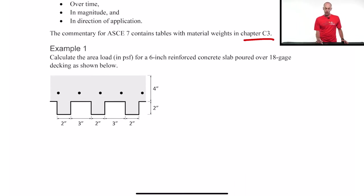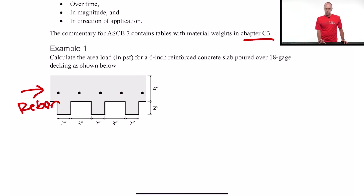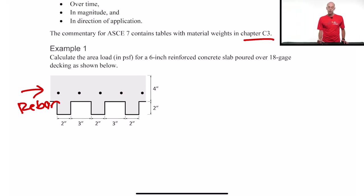Let's do a fairly simple example about how to calculate dead loads. This is a concrete floor slab — reinforced concrete — and the little dots represent the rebar, the reinforcing. There's a metal deck at the bottom, and they're pouring concrete on top of that with reinforcing inside. We're going to calculate the total weight in pounds per square foot.